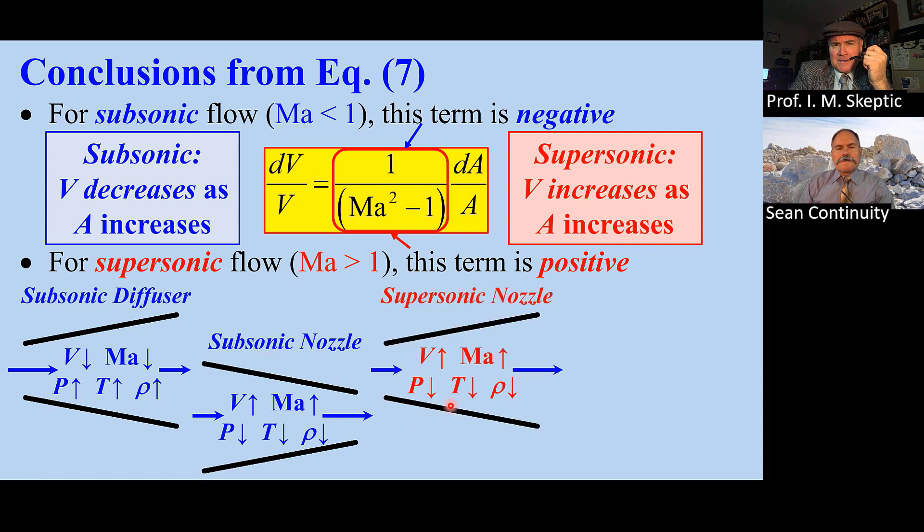A supersonic nozzle is a diverging duct. Speed and Mach number go up just as they do for the subsonic nozzle. Finally, a supersonic diffuser is a converging duct. Speed and Mach number go down.